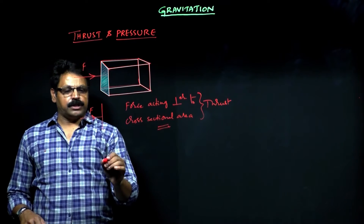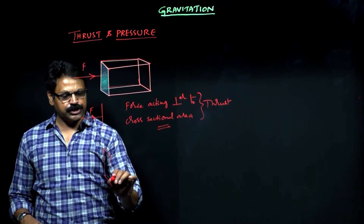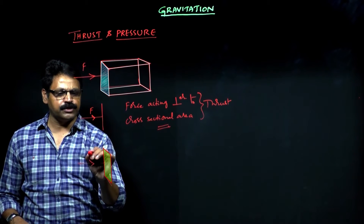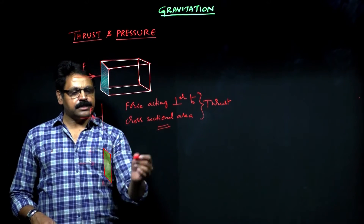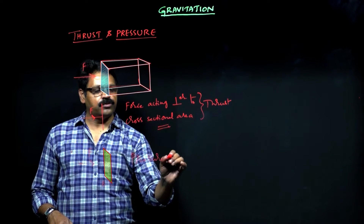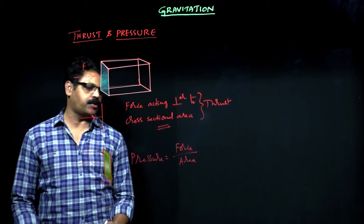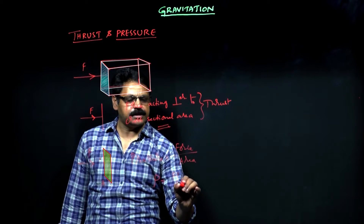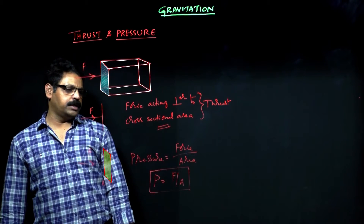Coming to pressure — if we have the area of cross-section of the surface where the force is acting, let us say the force acting (which we can also call thrust) is F and the cross-sectional area is A. Then pressure is calculated as force acting per unit area, that means force divided by area of cross-section: P = F/A.